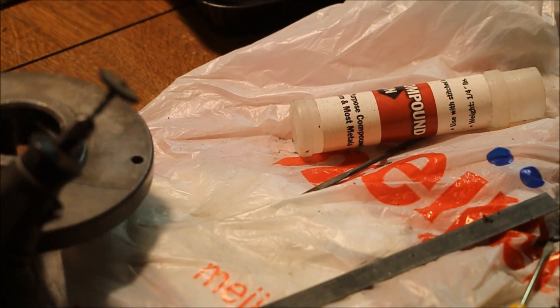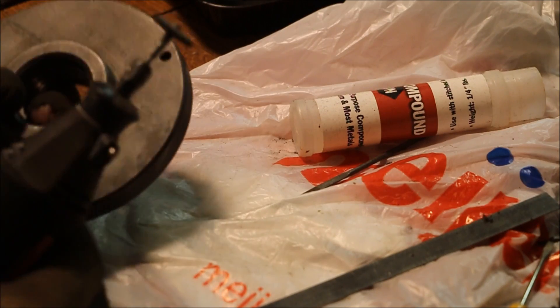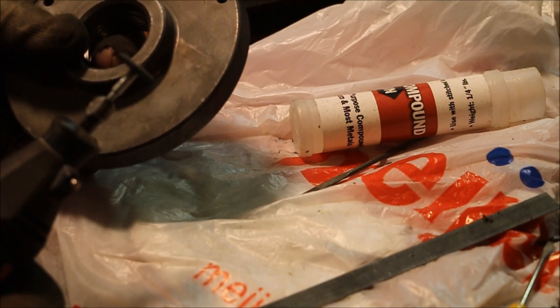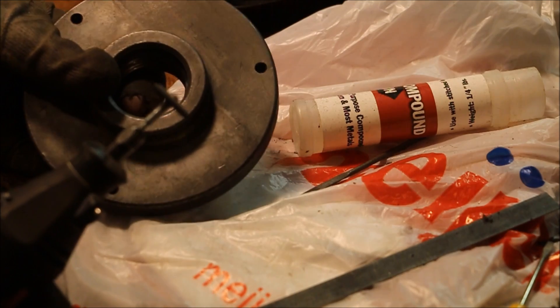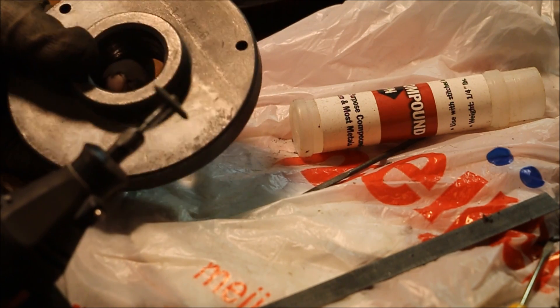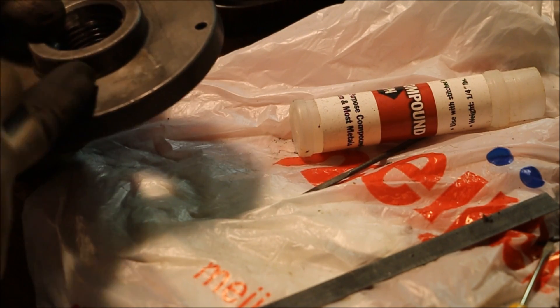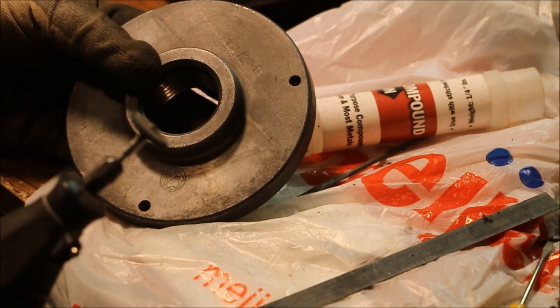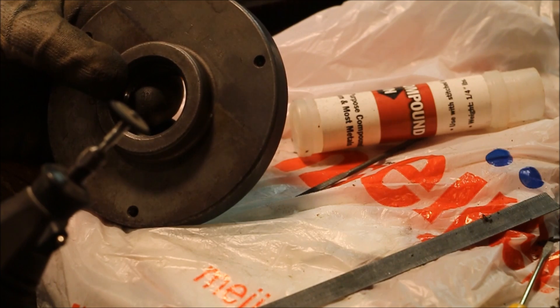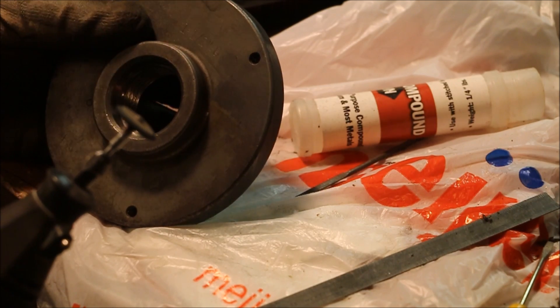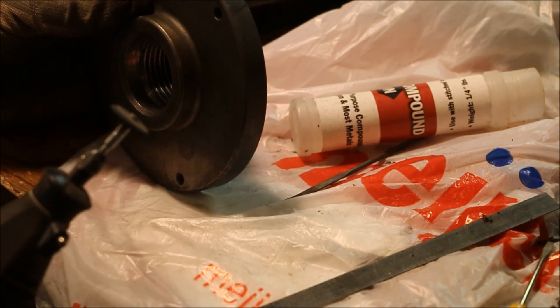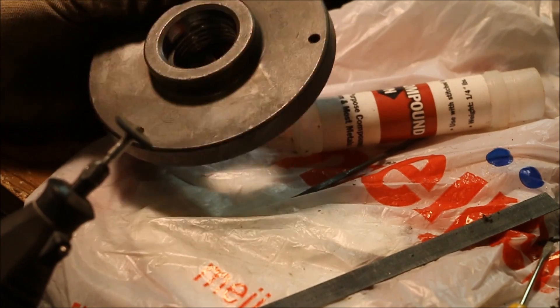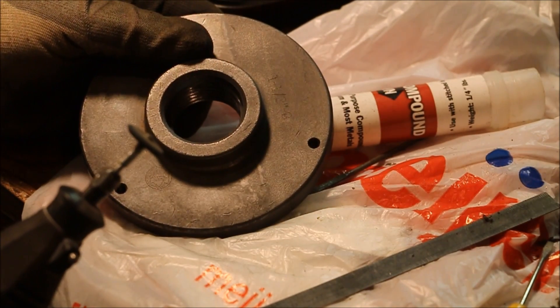This chuck is stamped 1.5-8". The spindle on the South Bend is also 1.5-8". This says South Bend on the adapter. That's what the plate is for. I know the spindle on the lathe itself is good because all the other chucks fit right on. Buying this on eBay I got one that was not right.